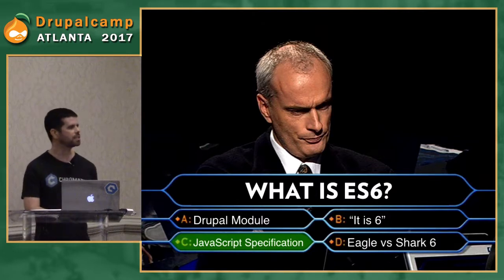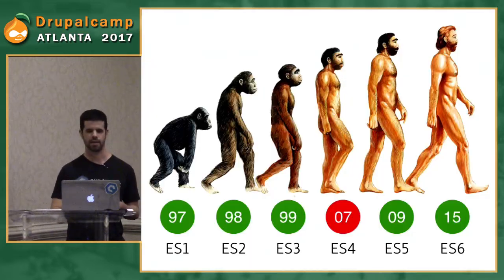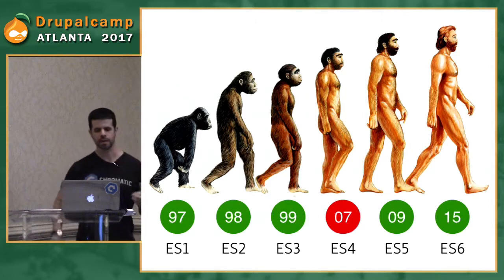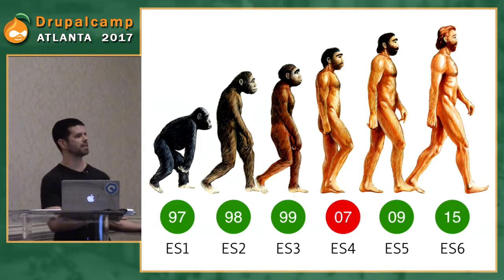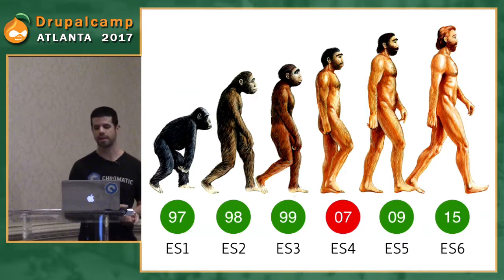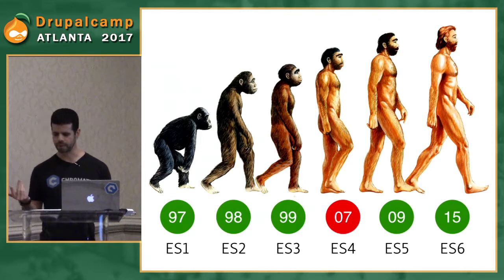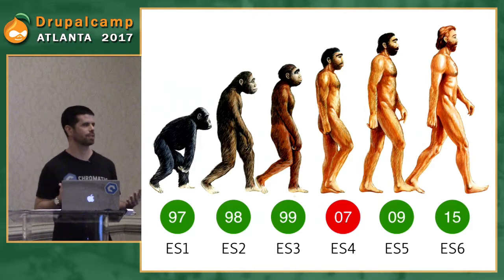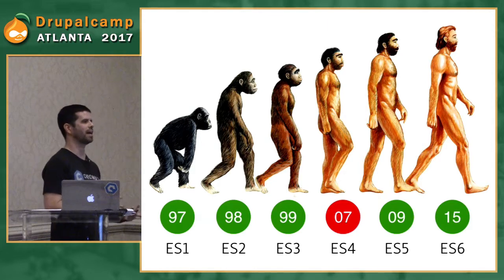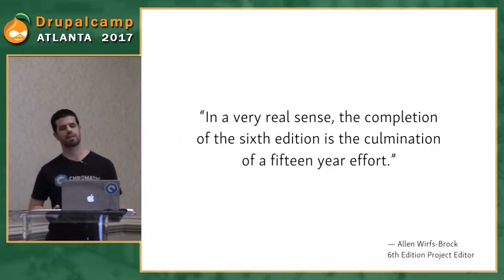So what is ES6? ES6 is basically just a JavaScript specification, otherwise known as ECMAScript 2015. To give you an idea of the history, it goes all the way back to 1997 with ES1, then yearly updates for ES2 and ES3. ES4 in 2007 was abandoned due to political differences and fighting over the complexity of the language. Then in 2009 we got ES5, and finally ES6 in 2015.